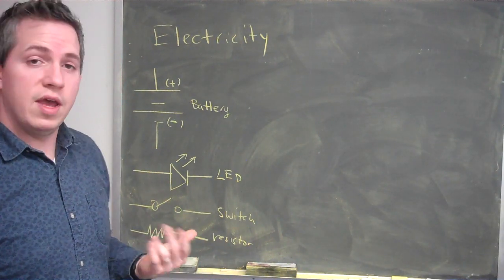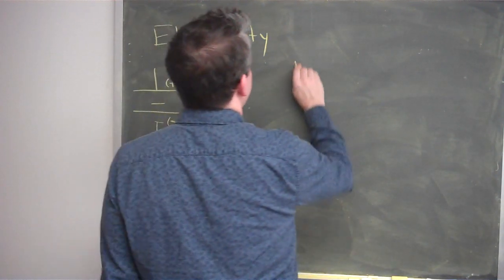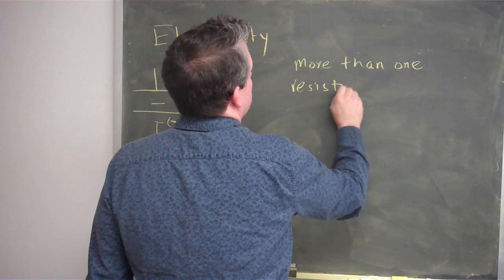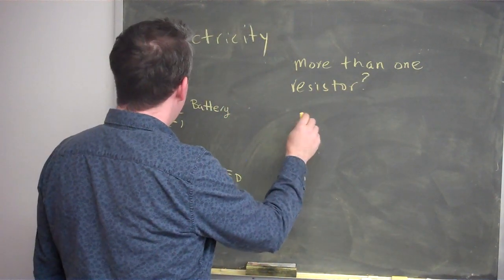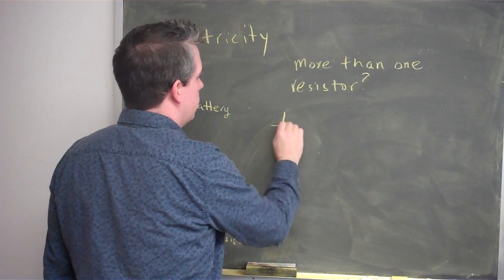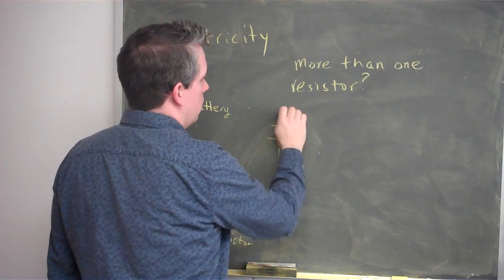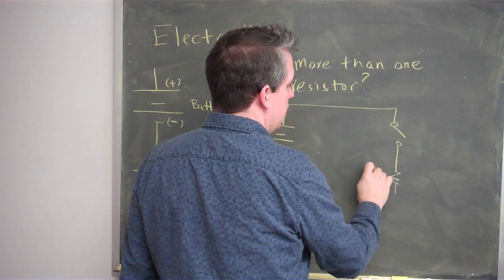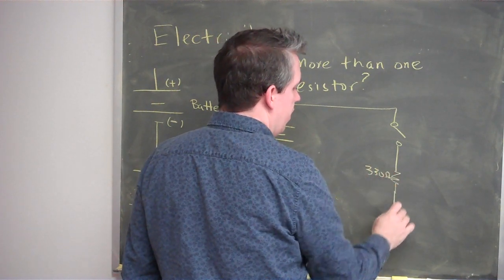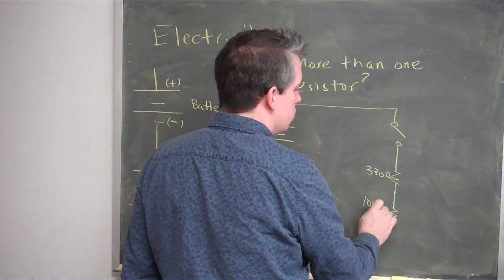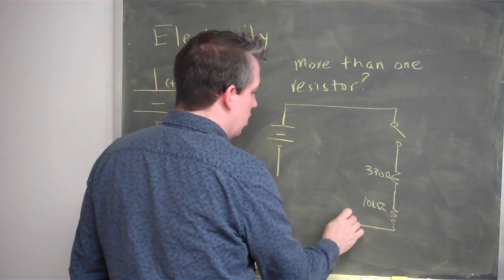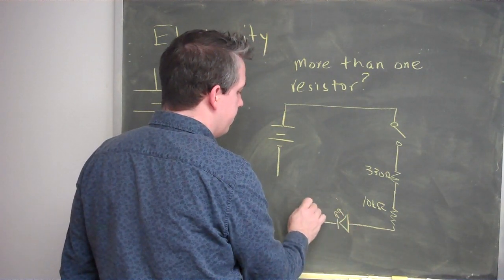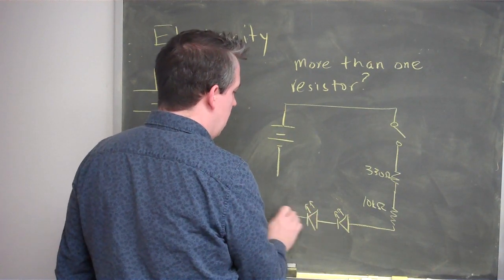One of the questions you can ask yourself is: what if I have more than one resistor on a series circuit? For example, suppose I've got some type of battery and I'm running through it and I've got a switch. Then I have a resistor — say this is 230 ohms. And then I have another resistor, and this is 10k ohms. And then I have an LED light bulb, and then I have another LED light bulb.